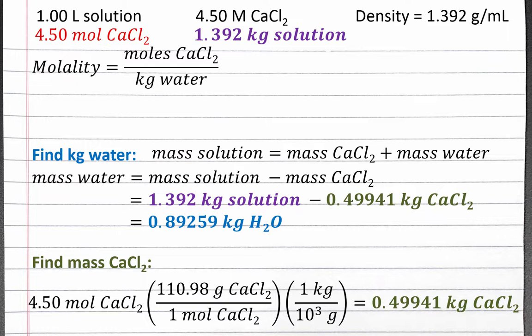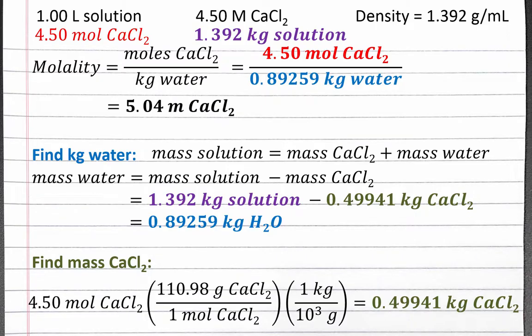Our last step is to plug the moles of calcium chloride and kilograms of water into our molality equation. Completing the calculation, we get 5.04 molal calcium chloride.